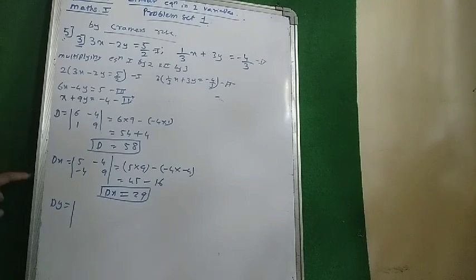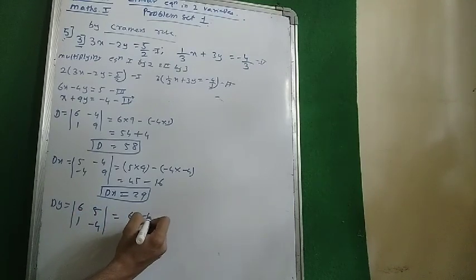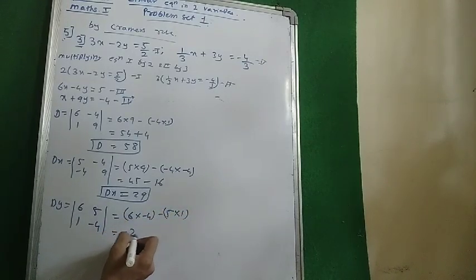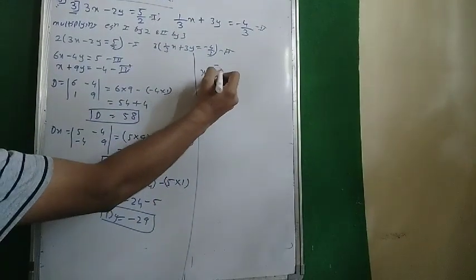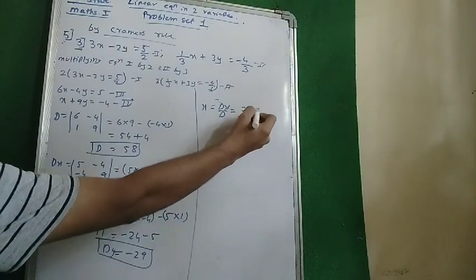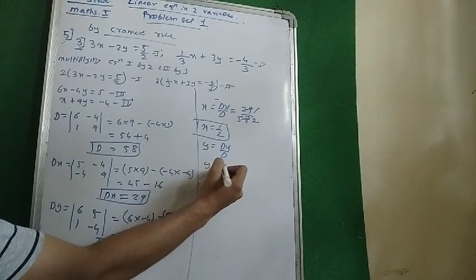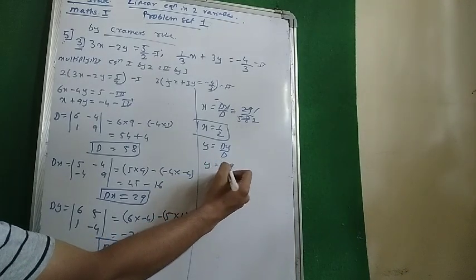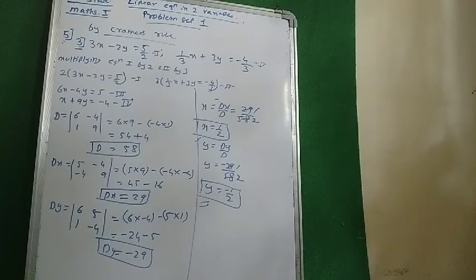For Dy, whatever was left in Dx — we didn't take x — so 6 and 1 come first. For y we are not taking y, so we take constants 5 and minus 4. So we have 6 into minus 4 minus 5 into 1, giving minus 24 minus 5, so minus 29. Minus 29 is the value of Dy. Now x equals Dx upon D, that is 29 upon 58, so x equals 1/2. And y equals Dy upon D, that is minus 29 upon 58, so y equals minus 1/2.